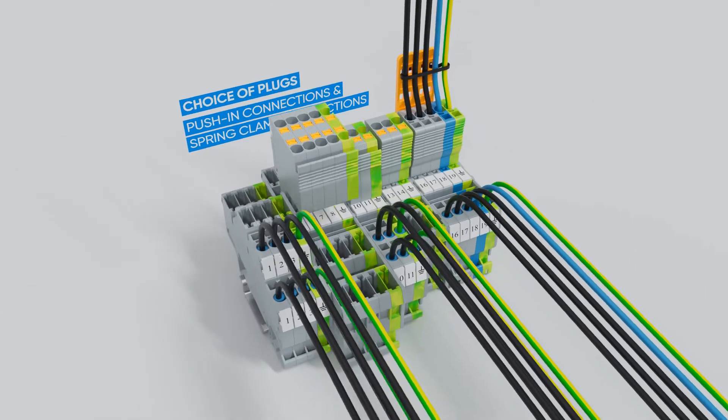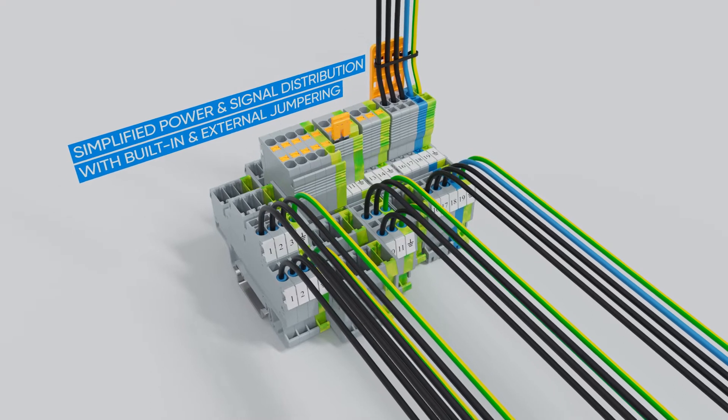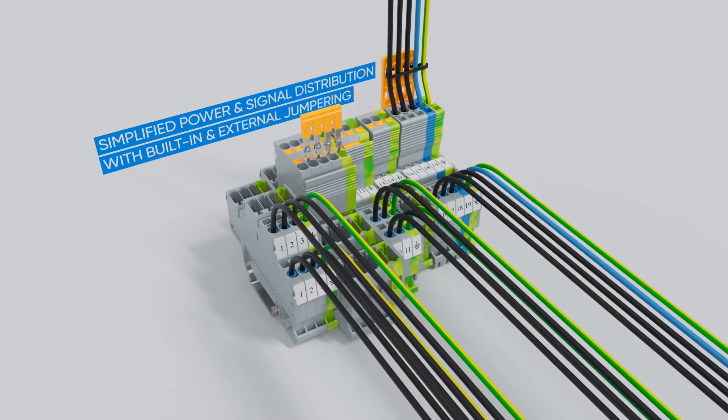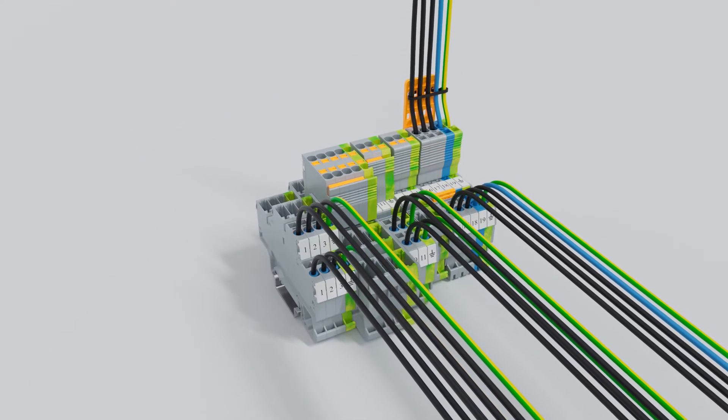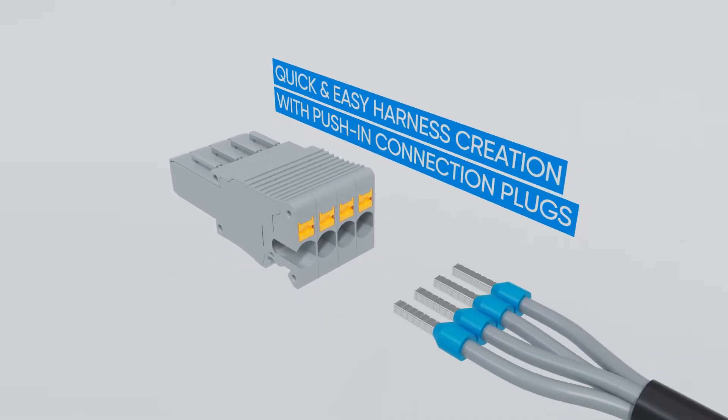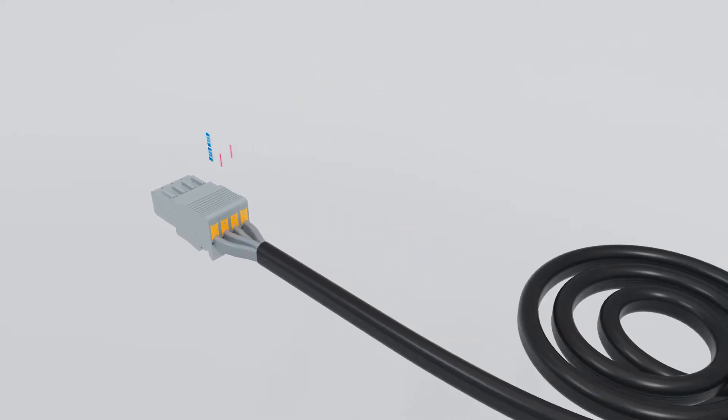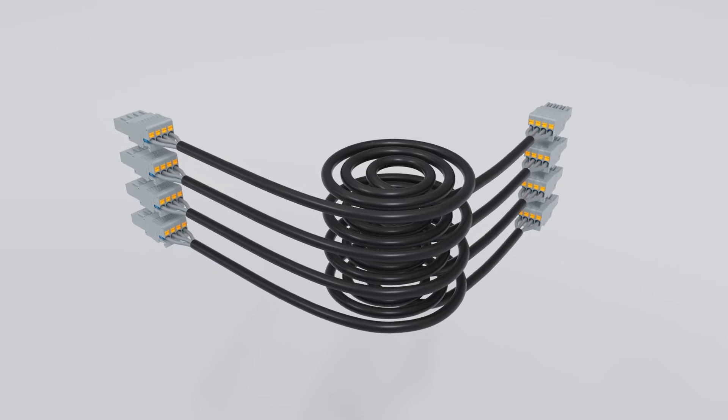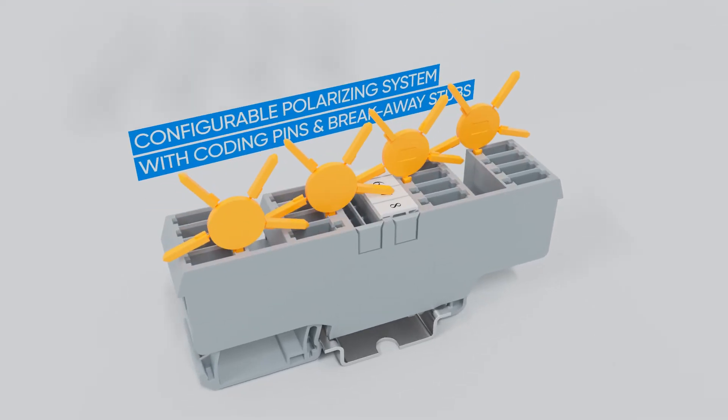Push-in connections and built-in jump ring features in the plugs allow users to quickly design complex circuits. Wire harnesses can be made by simply inserting lugged wires into push-in plugs, reducing wiring time by 90%.